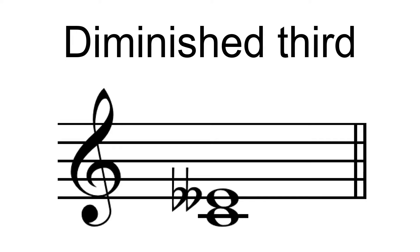Being diminished, it is considered a dissonant interval. In equal temperament, a diminished third is enharmonic with a major second, both having a value of 200 cents.